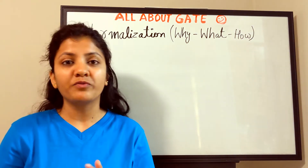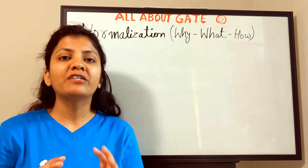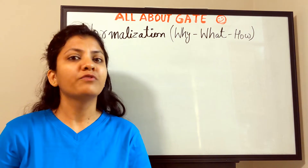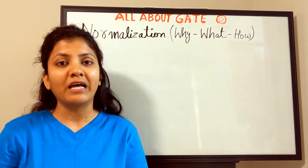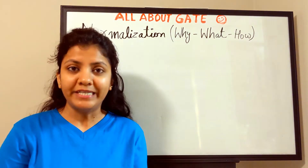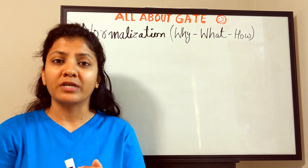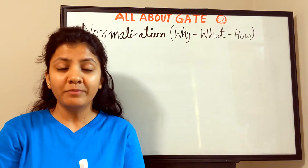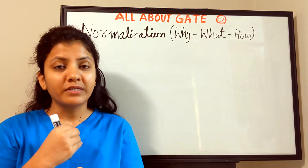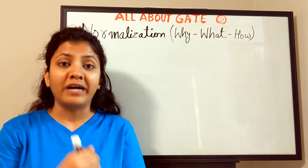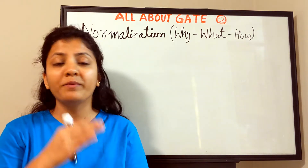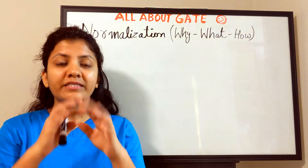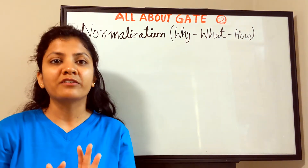We have understood a relational schema design — what a relational schema is, which in common language is called a table where we store data. A relational schema structure will have the name of the relation, attributes, attribute names, and the relations among attributes defined in terms of functional dependency. There will be a set of functional dependencies denoted by F.